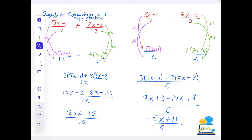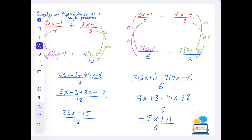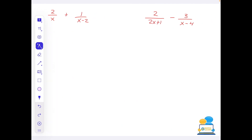Now we make it slightly harder — the next type has algebra on the bottom of the fraction. The question wording is the same: 'write as a single fraction', 'simplify', 'express as a single fraction'. When we had numbers on the bottom like 3 and 4, we'd find the smallest multiple they share. But when there's algebra on the bottom we can't figure out what that number would be.